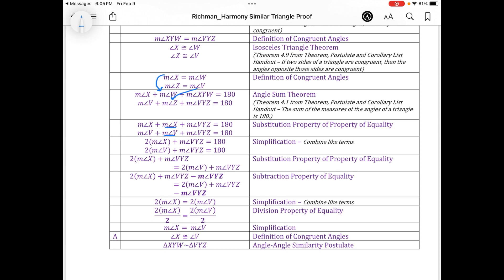At this point, I knew I could utilize the substitution property since they were both equal to 180. So I set the left side equal to two times the measure of angle X plus the measure of angle XYW, and similarly, two times the measure of angle V plus the measure of angle VYZ.